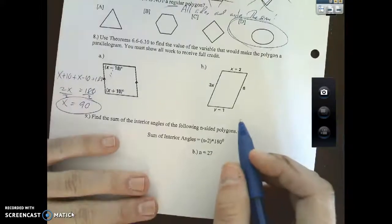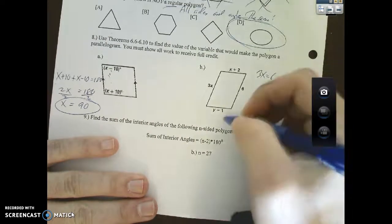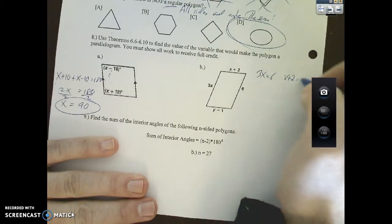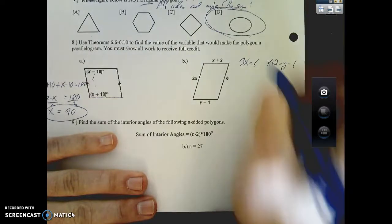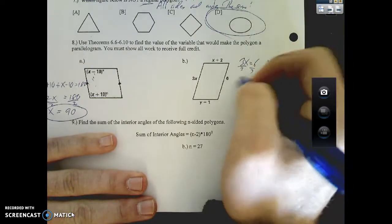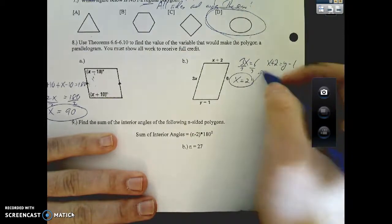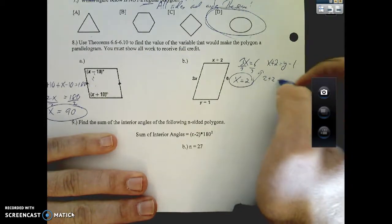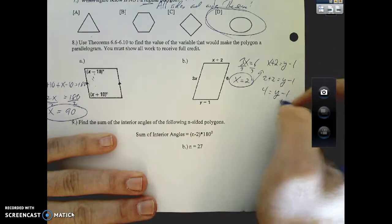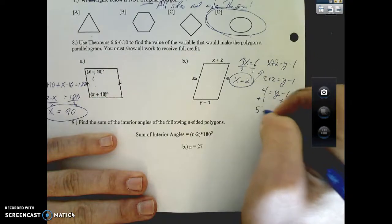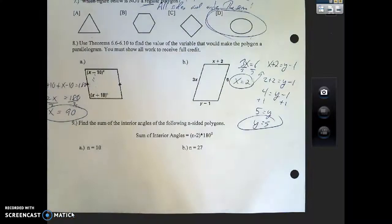Over here we could do 3x equals 6, and I can do x plus 2 equals y minus 1. Always do the easy one first. I'm going to solve for this one: divide by 3, x equals 2. Now I can plug this back in over here: 2 plus 2 equals y minus 1, I can add 1 over.